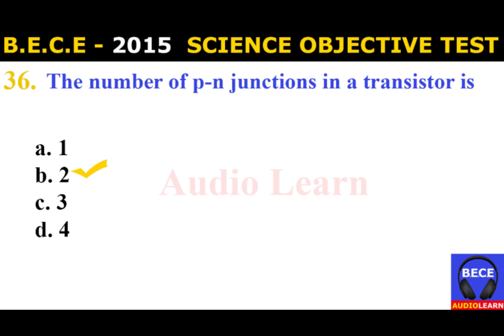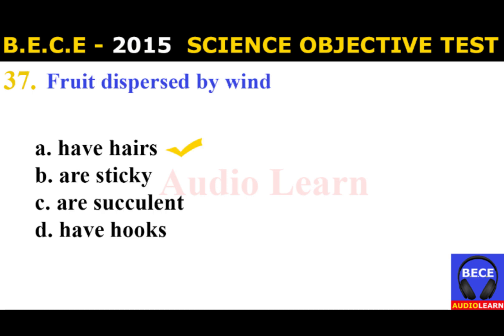Number 36: The number of P-N junctions in a transistor is A. One, B. Two, C. Three, D. Four. The answer is B. Two.